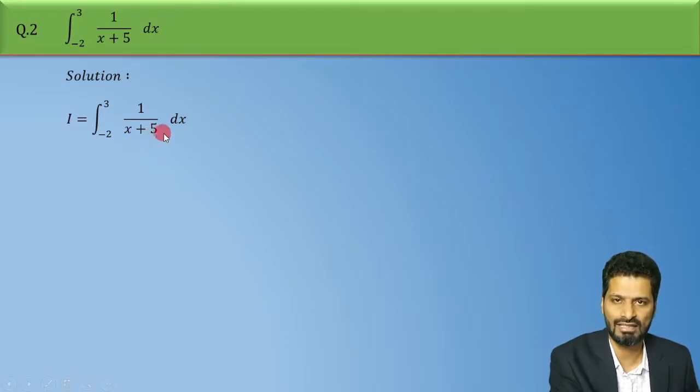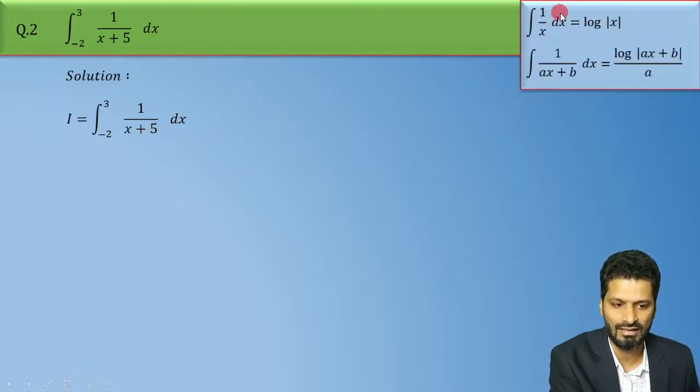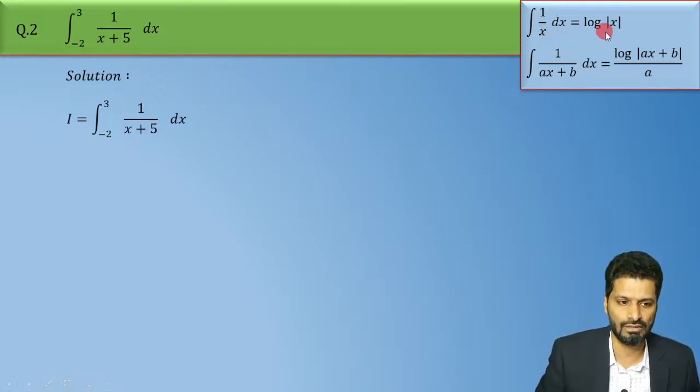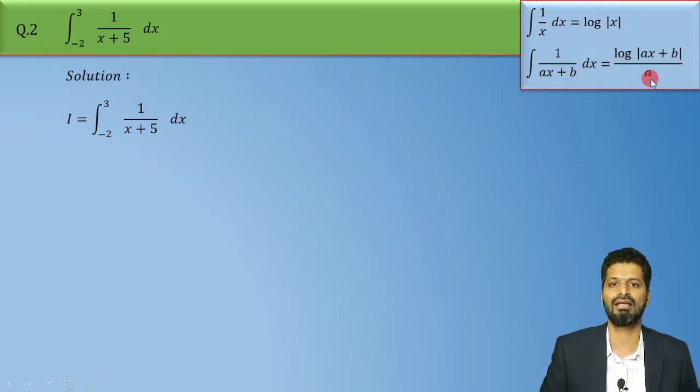So let's have a look at this standard formulae appearing on the screen. I hope all of you know that integral of 1 upon x is log mod x and integral 1 upon ax plus b dx is log mod ax plus b the whole divided by a.